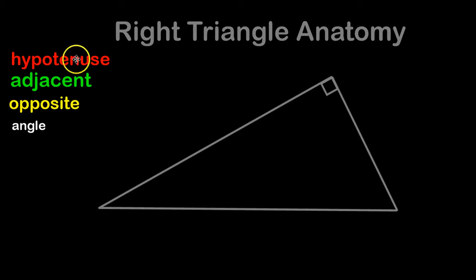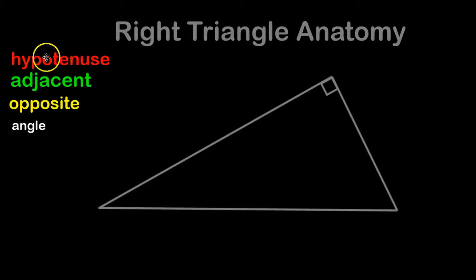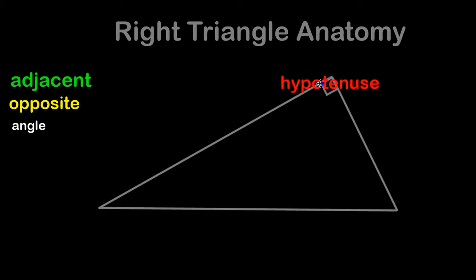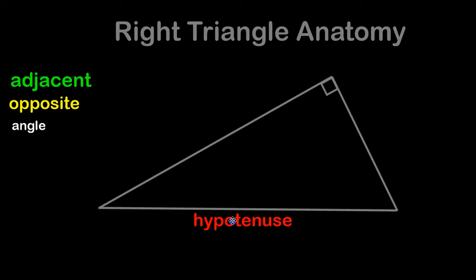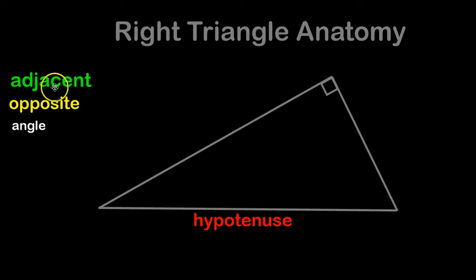So what are all the parts of a right triangle? Let's take a look at the hypotenuse — we've worked with this one. The hypotenuse is always located across from the right angle. The opposite and adjacent are kind of new terms in that they depend on whatever angle we are using.